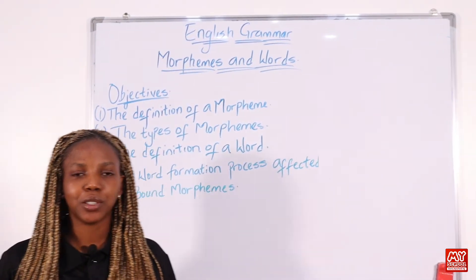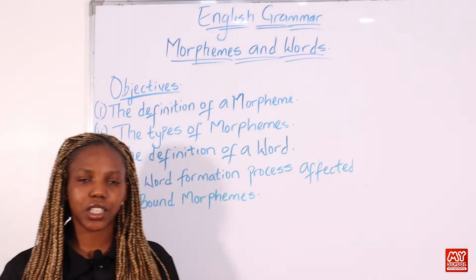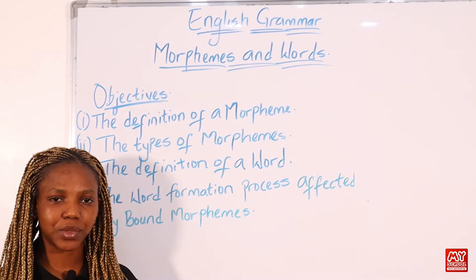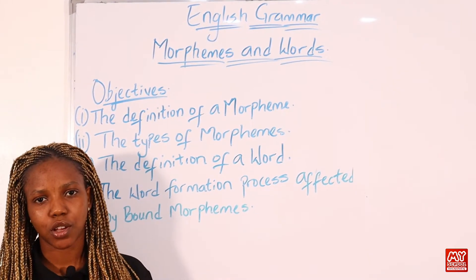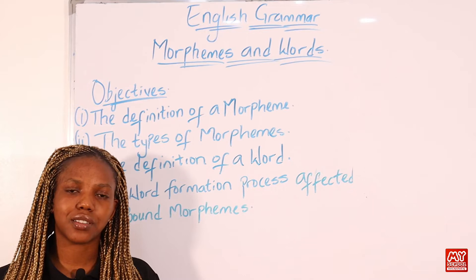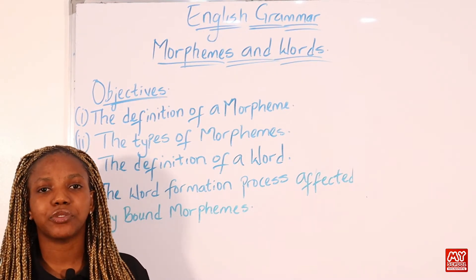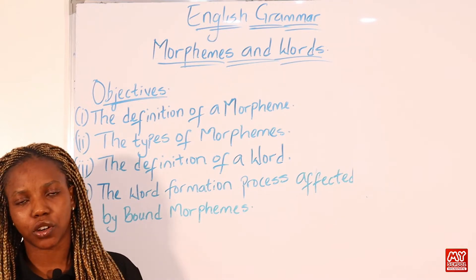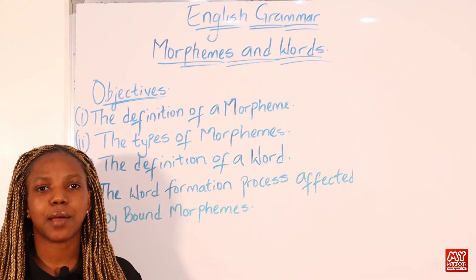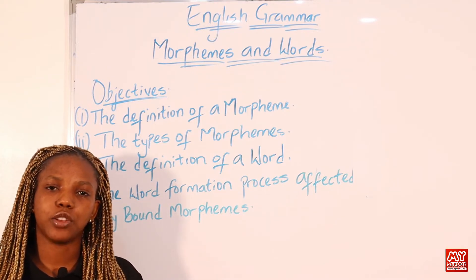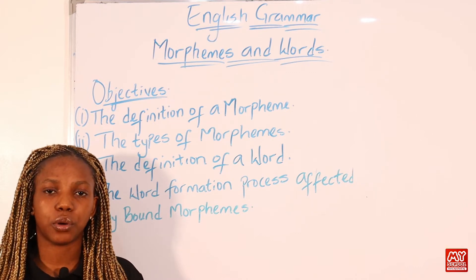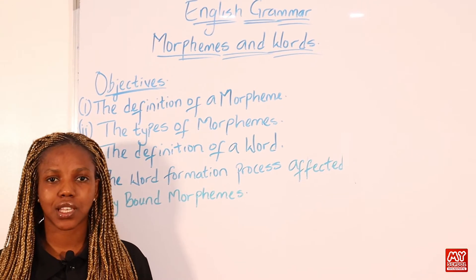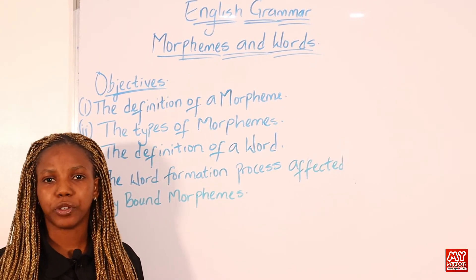Welcome back to my school channel. So right now we'll begin with today's lesson. Do not forget the topic is morphemes and words. I've outlined four objectives for today's lesson. Number one, you'll be learning the definition of a morpheme. Number two, the types of morphemes. Number three, you'll be learning the definition of a word. And lastly, we'll be looking at the word formation process affected by bound morphemes.